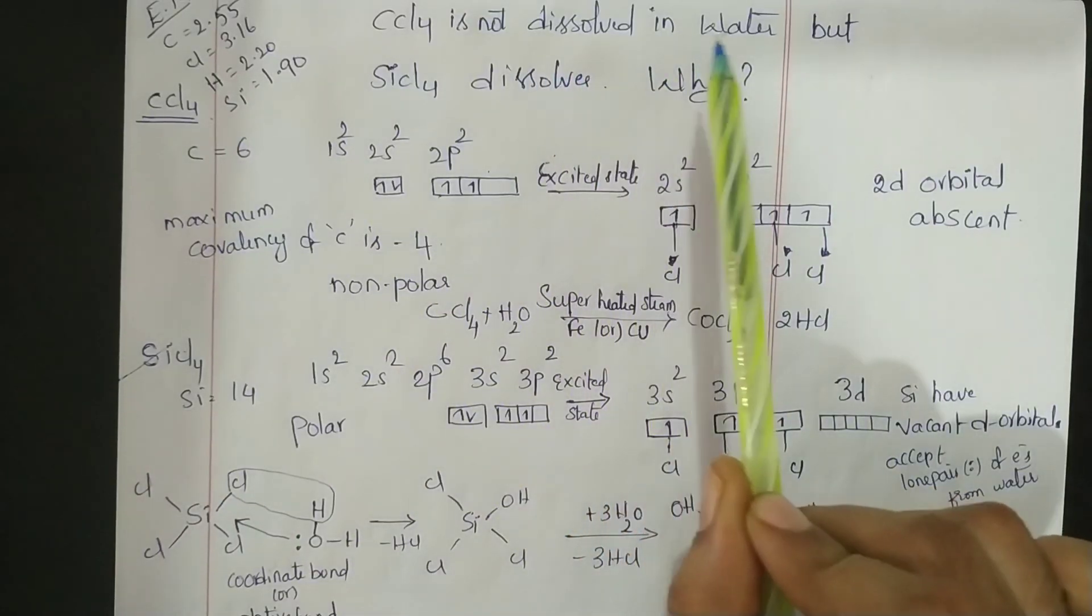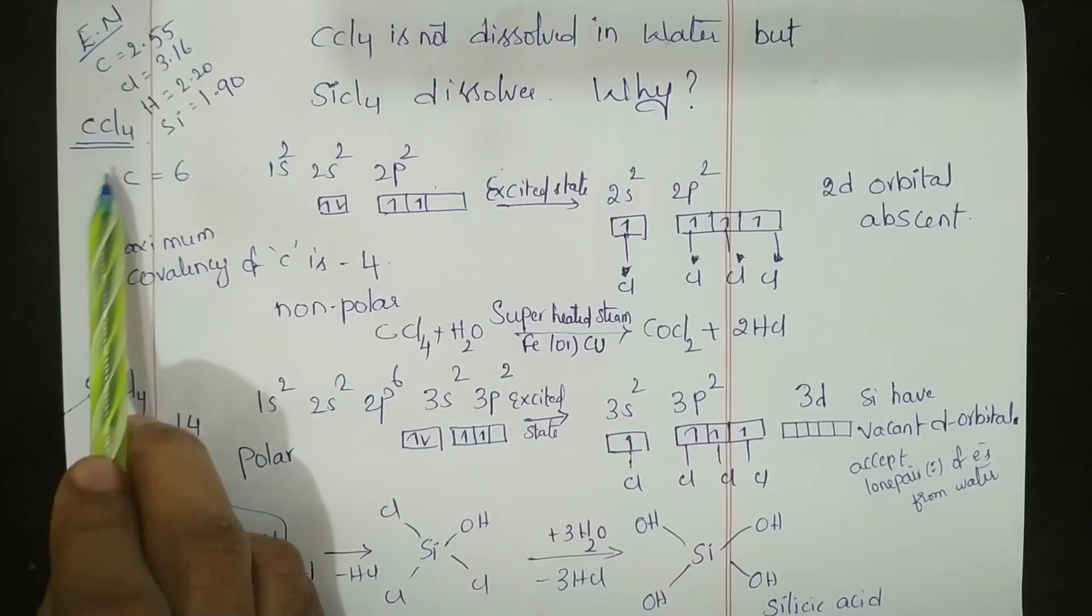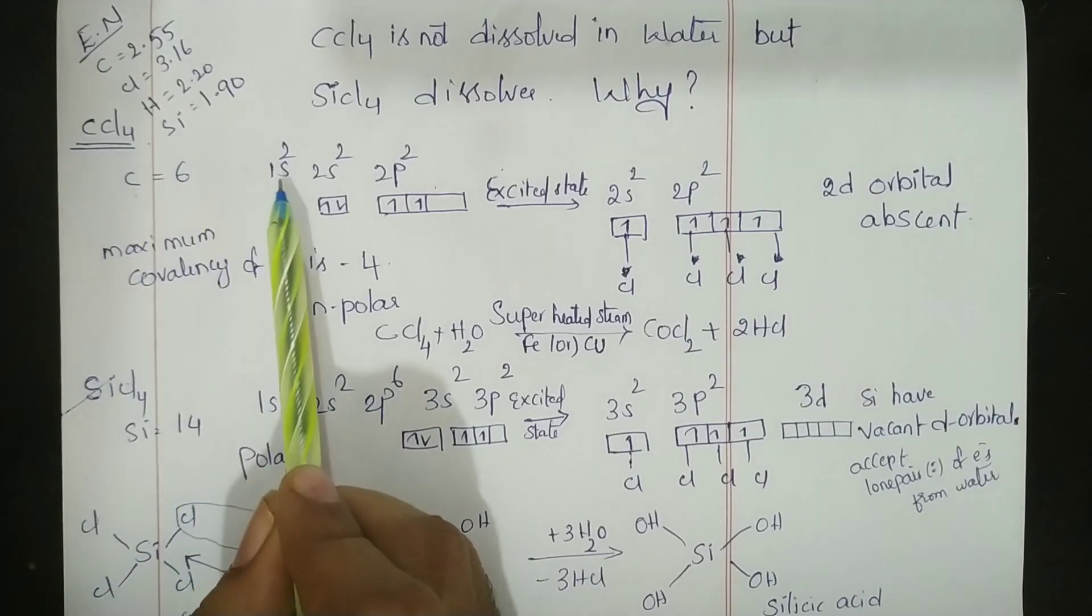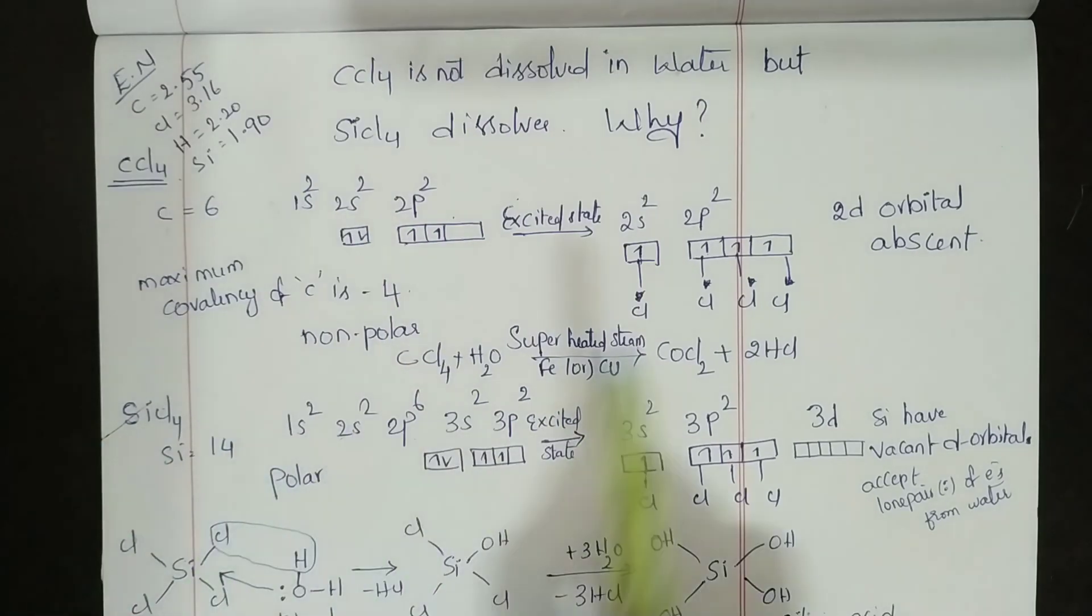CCl4 is not dissolved in water but SiCl4 dissolves. Why? In CCl4, carbon atomic number is 6, that is 1s² 2s² 2p². In excited state, this 2s electron is entered into the 2p orbital, so carbon has four lone electrons.